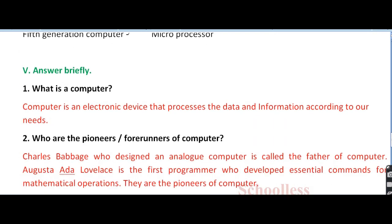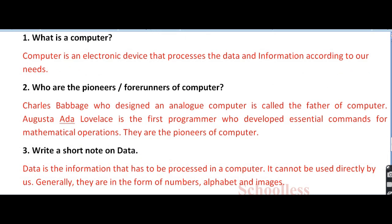Now coming to the next question: answer briefly. Question number one: what is a computer? A computer is an electronic device that processes data and information according to our needs. Question number two: who are the pioneers or forerunners of computer? Charles Babbage, who designed an analog computer, is called the father of computer. Augusta Ada Lovelace is the first programmer who developed essential commands for mathematical operations. They are the pioneers of computers.